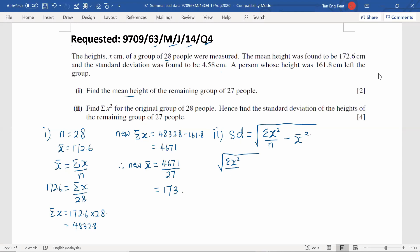Divided by 28 people, minus the mean of the 28 people, which is 172.6, and needs to be squared. And this is equals to the standard deviation given by the questions, 4.58. So we try to find out the sigma X squared.